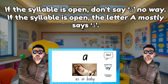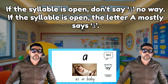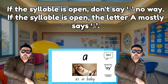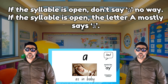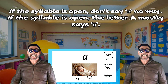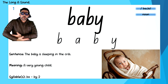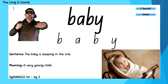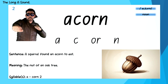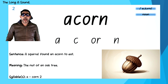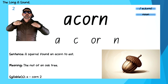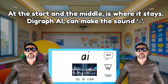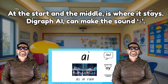If the syllable is open, the letter A says A. Baby — B-A-B-E. Acorn — A-C-O-R. At the start and the middle is where it stays.